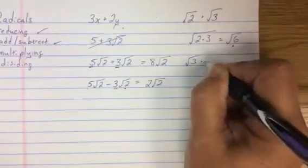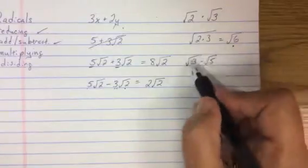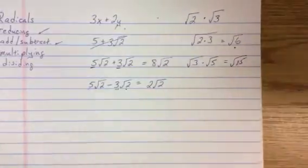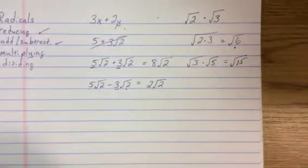Do it again. √3 × √5. My radicals are the same type. So 3 times 5 is 15. So I see a radical 15. Multiplying radicals.